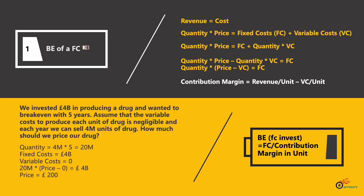Let's look at the first example. We invested 4 billion pounds in producing a drug and want to break even within five years. Assume the variable cost to produce each unit is negligible, and each year we can sell 4 million units. The total quantity over five years is 4 million times 5, which gives us 20 million. Fixed cost is 4 billion pounds and variable cost is assumed to be zero.